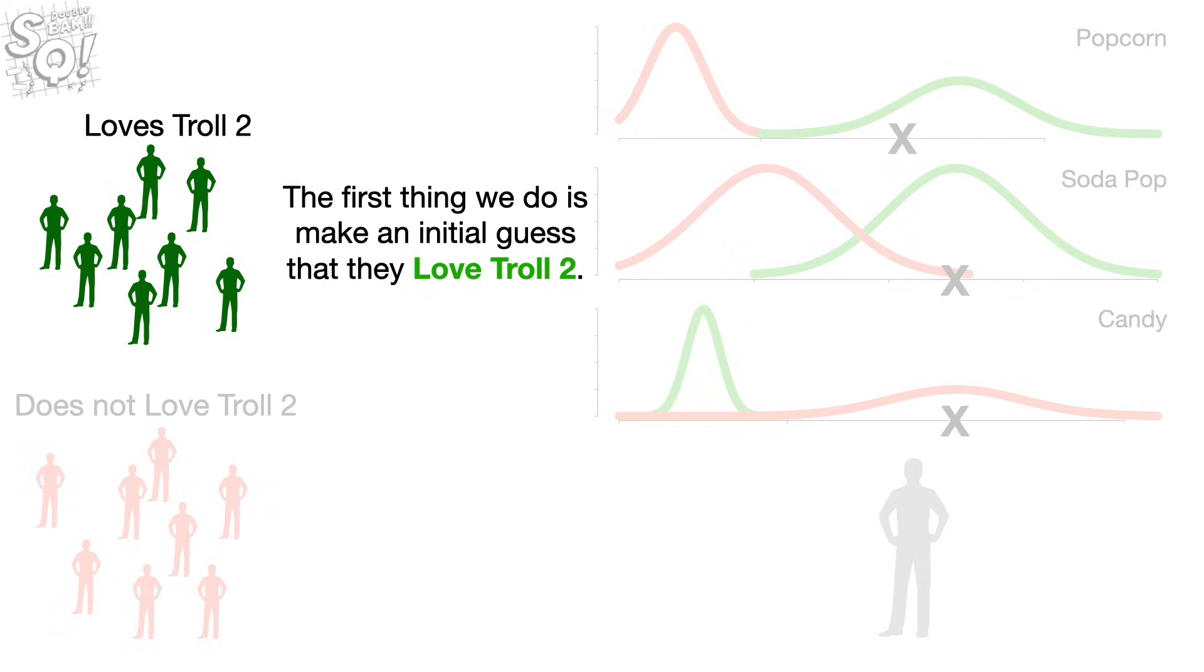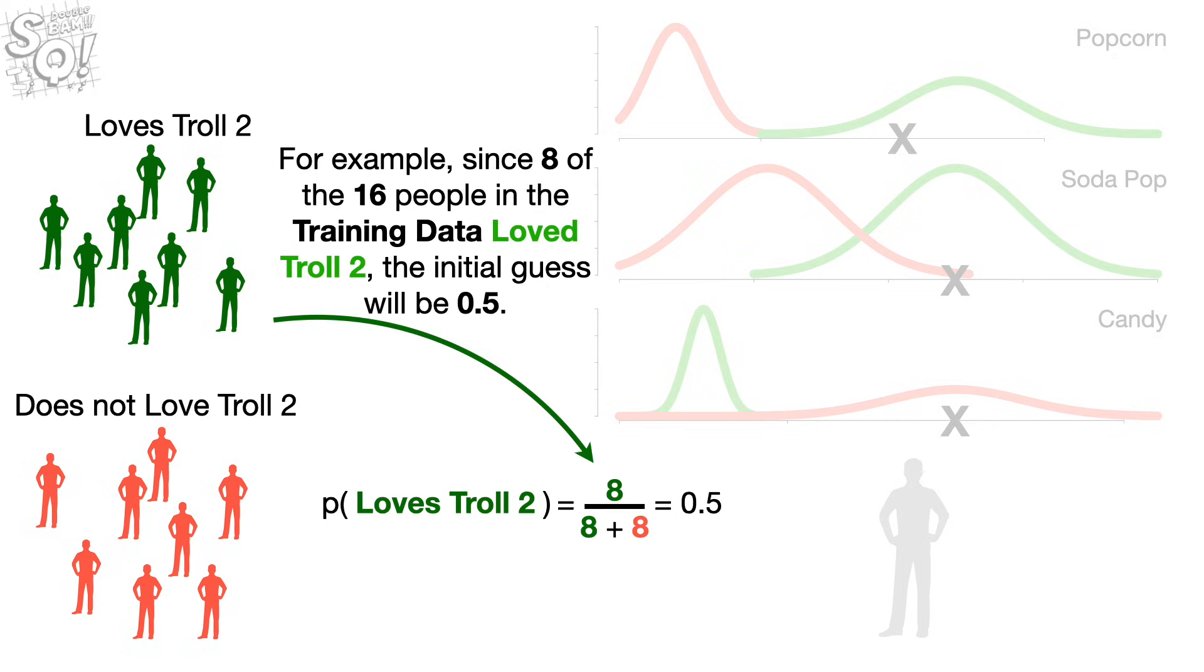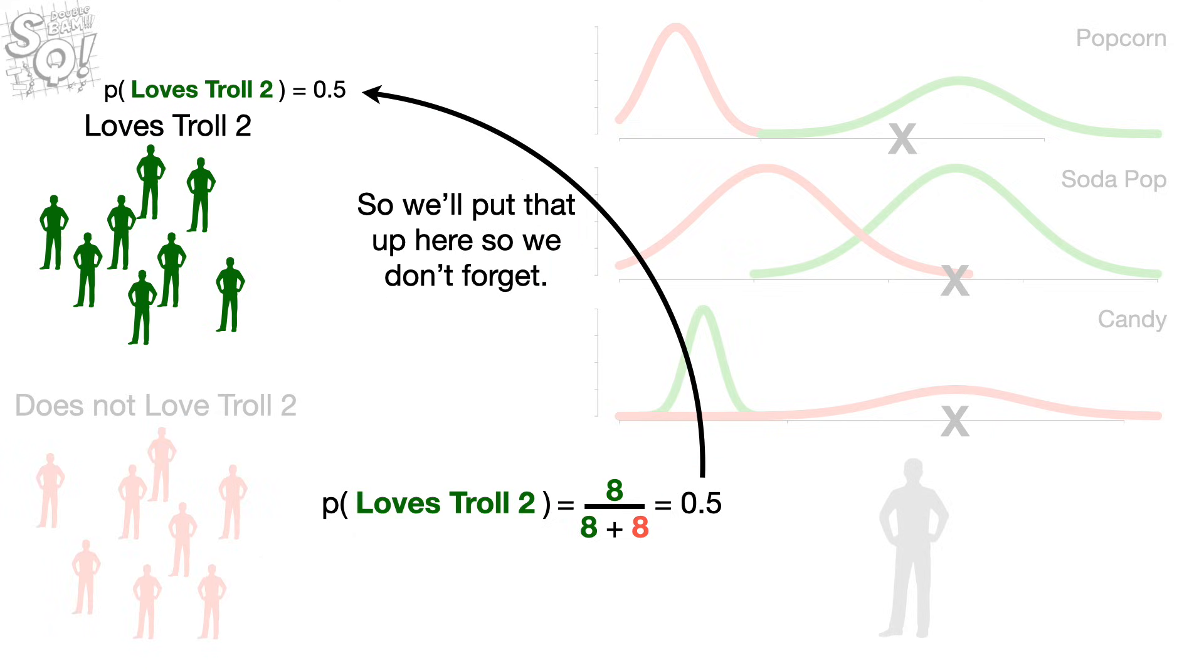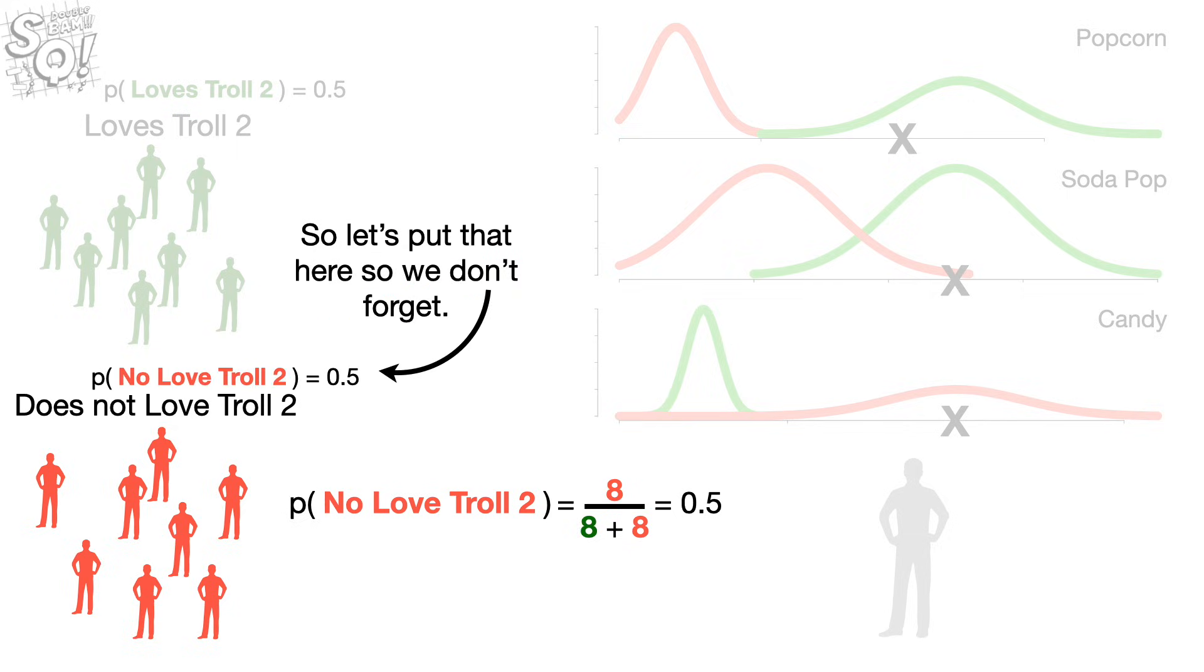The first thing we do is make an initial guess that they love Troll 2. This guess can be any probability that we want, but a common guess is estimated from the training data. For example, since 8 of the 16 people in the training data loved Troll 2, the initial guess will be 0.5. So we'll put that up here so we don't forget. Likewise, the initial guess for does not love Troll 2 is 0.5. So let's put that here so we don't forget.